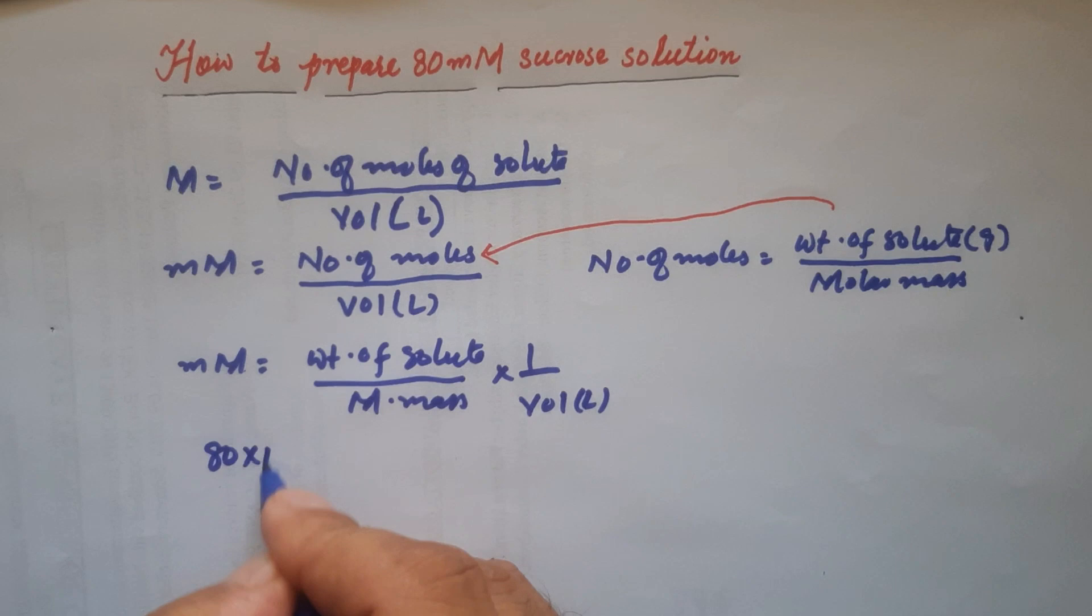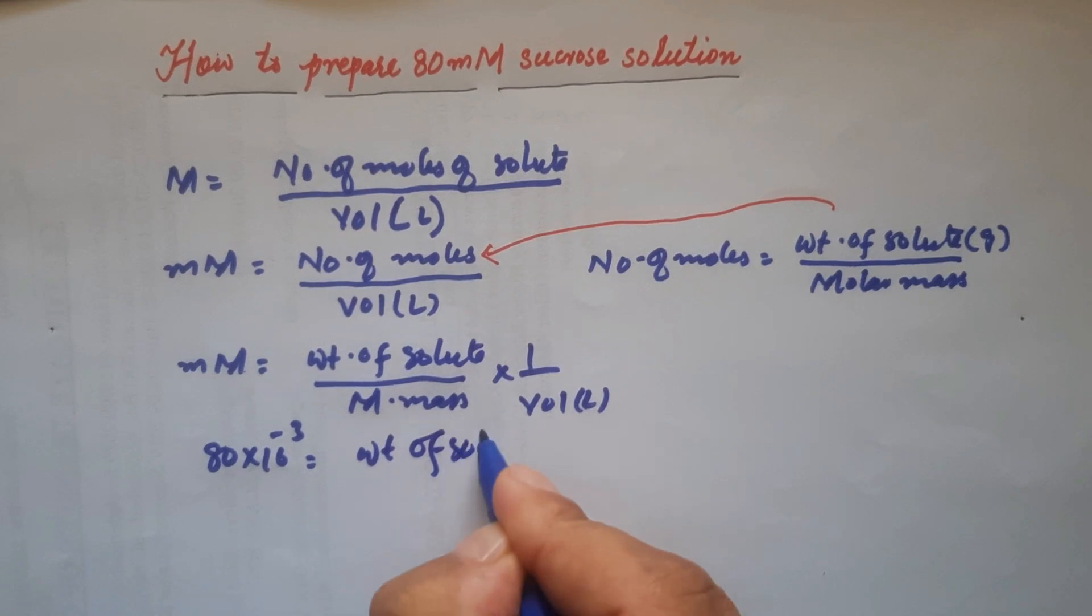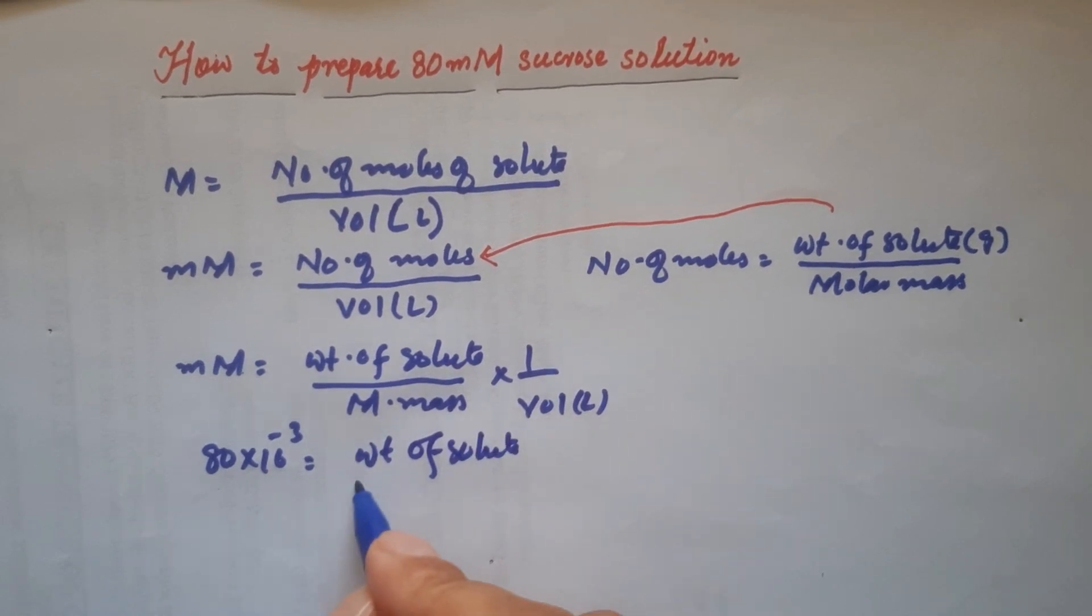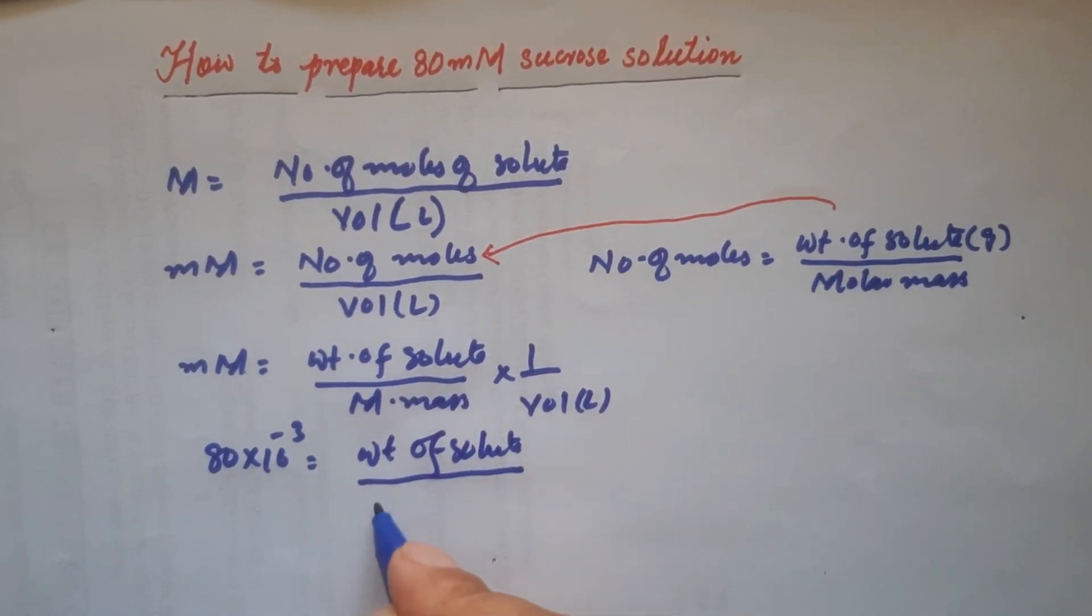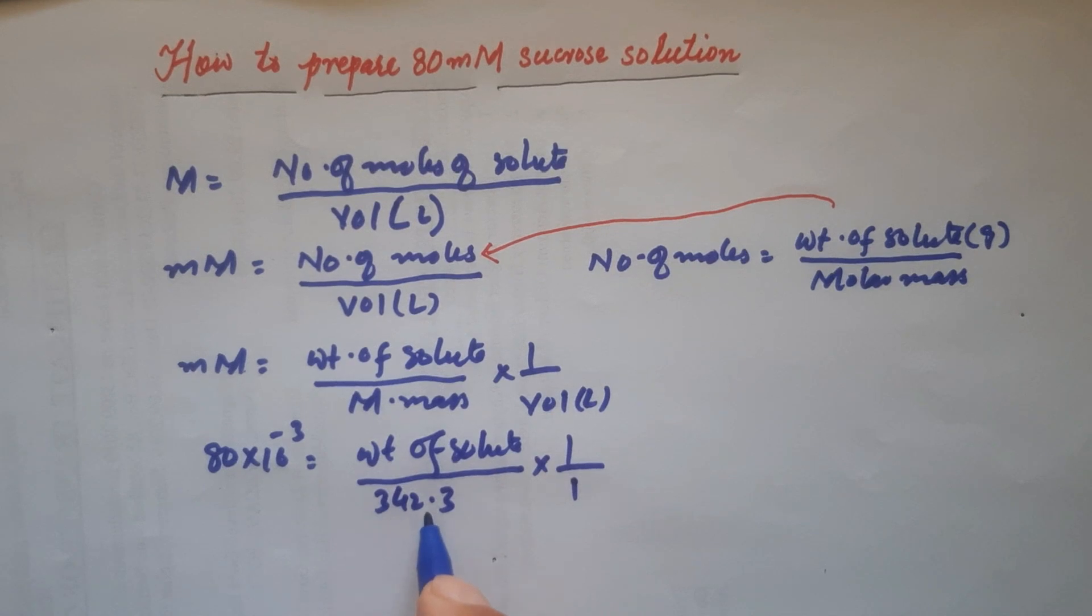So I'll write 80 times 10 to the power minus 3 equals weight of the solute. The molar mass of sucrose is 342.3 grams per mole times 1 liter. We simply need to multiply 342.3 times 80 times 10 to the power minus 3.